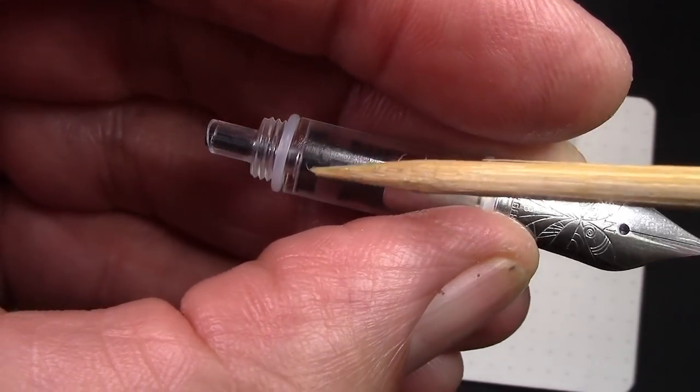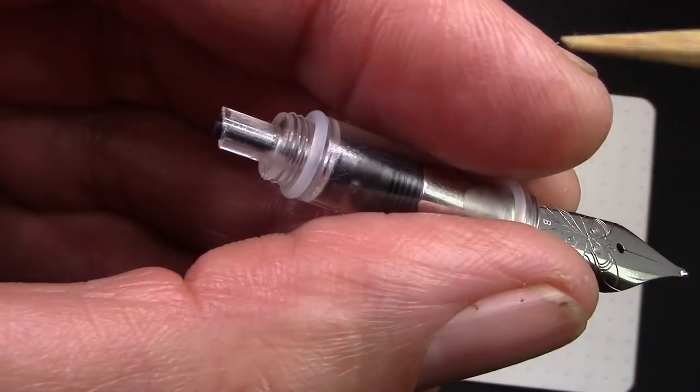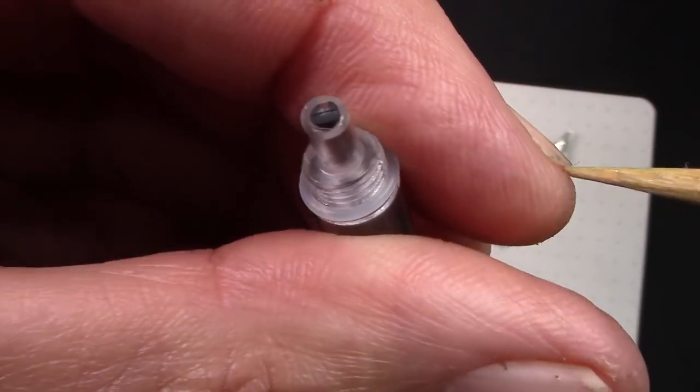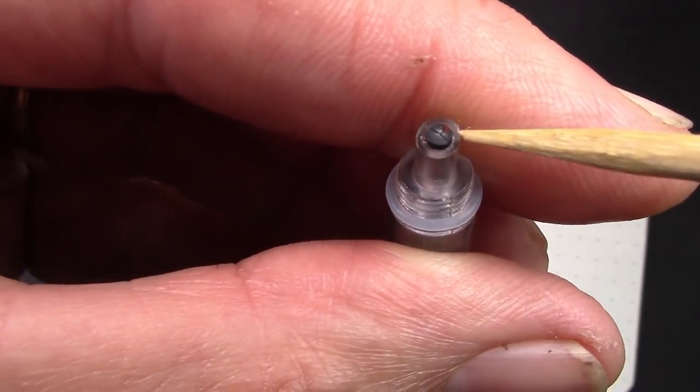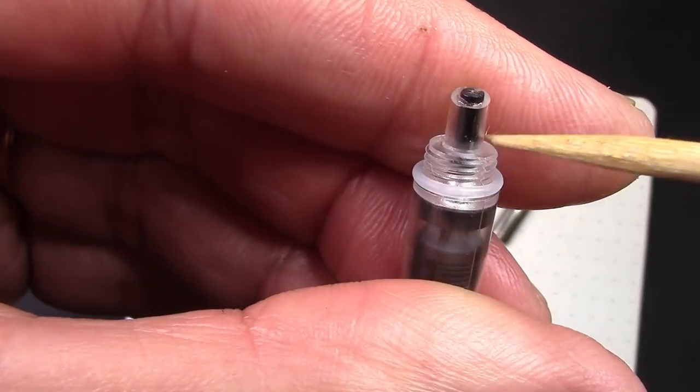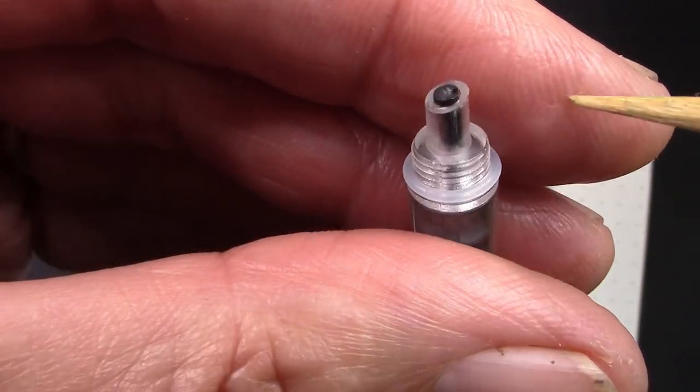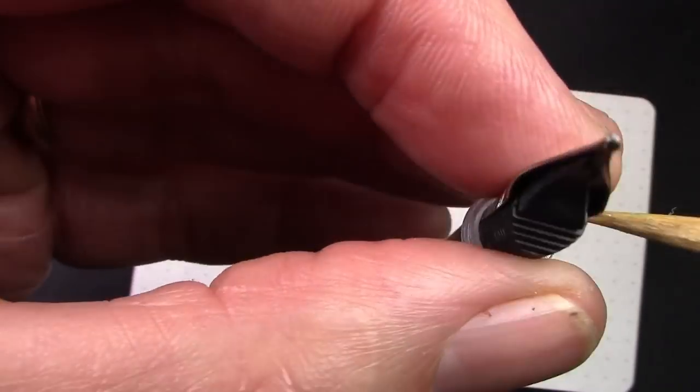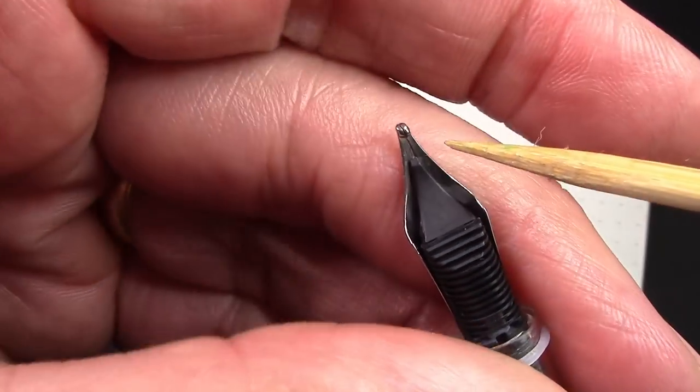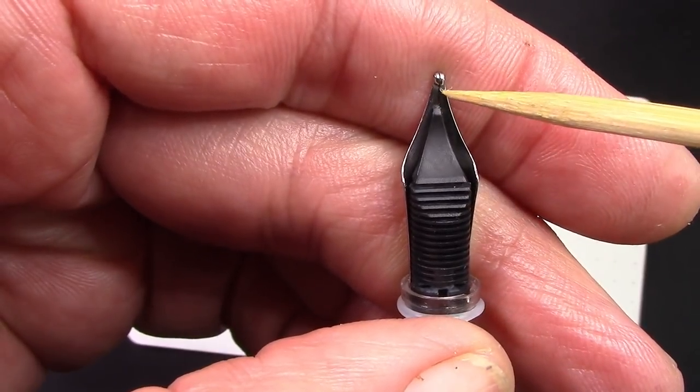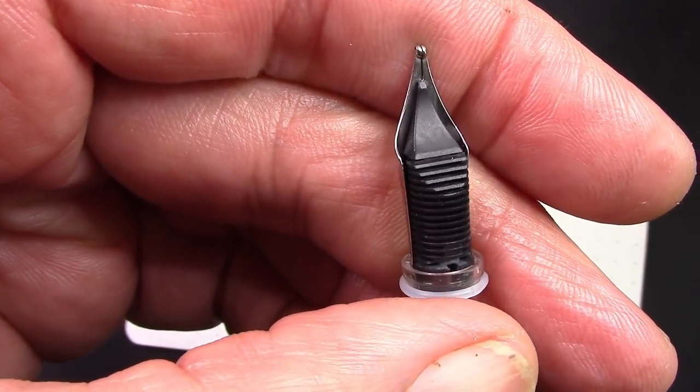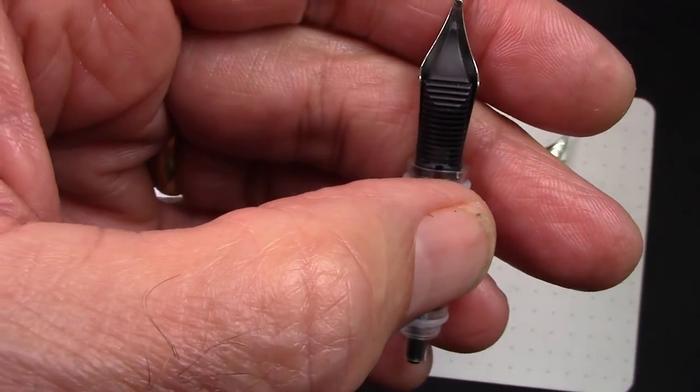The feed piece fits through this little extension, which is where the converter would attach to if there was a converter. As we talked about, I don't think this distance is great, but it may or may not impact the way it's going to work.